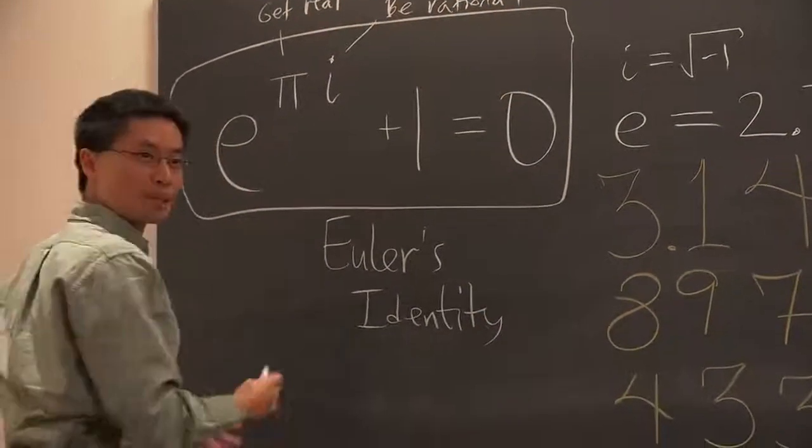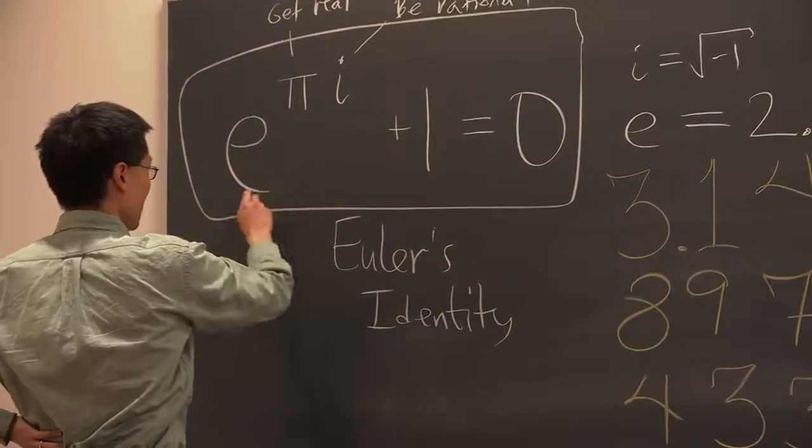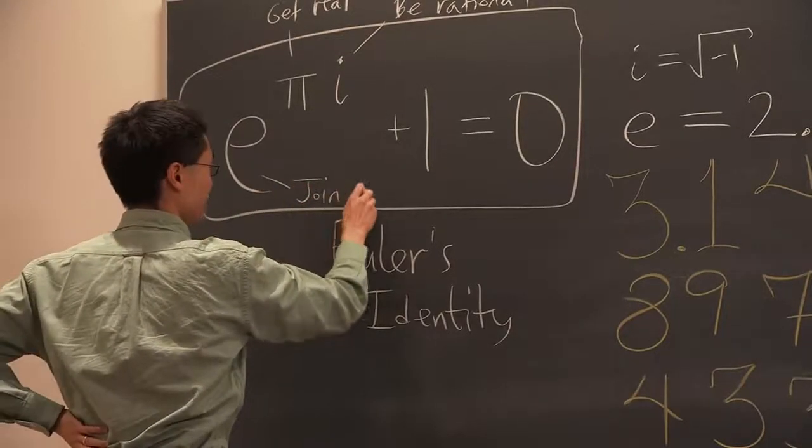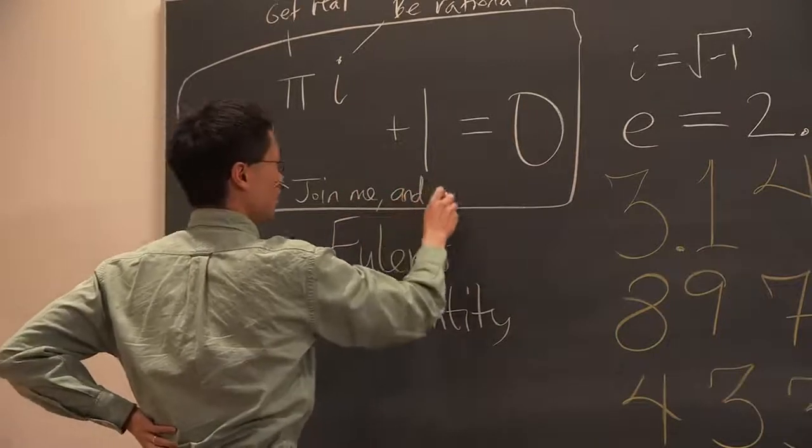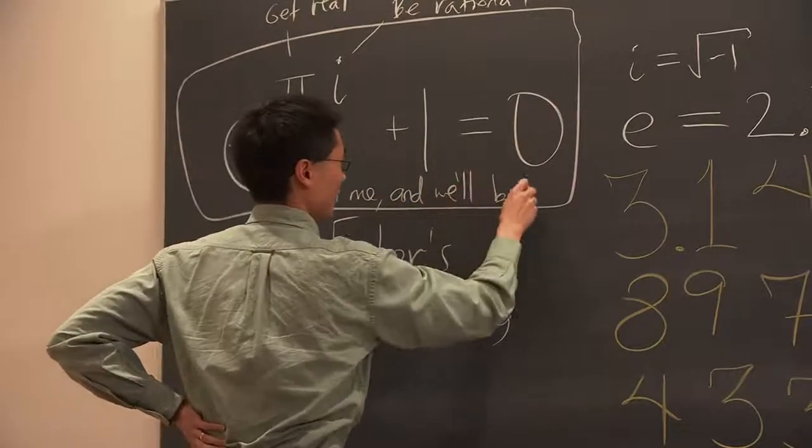The correct way to put the punchline on this joke is E should say 'join me and we'll be one.'